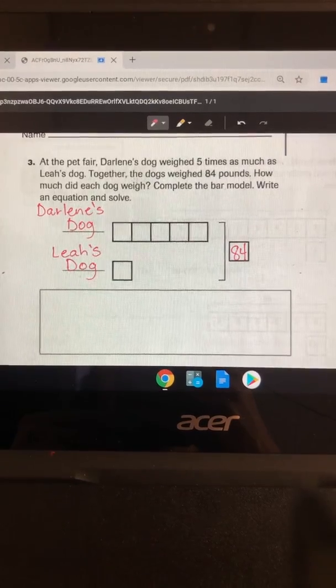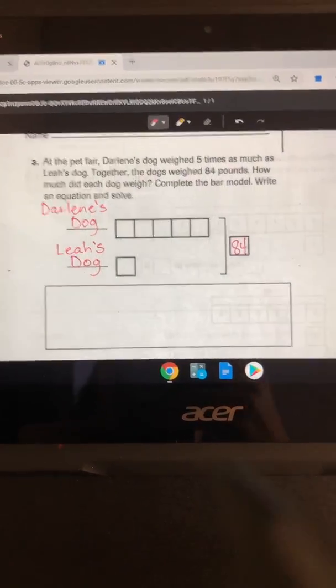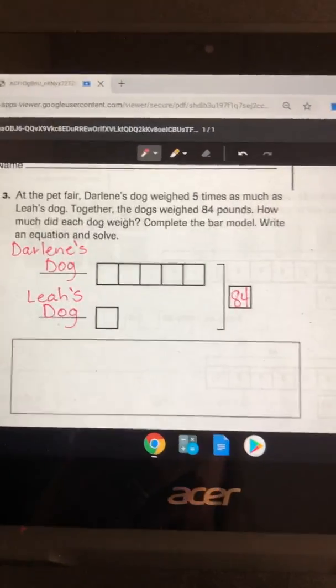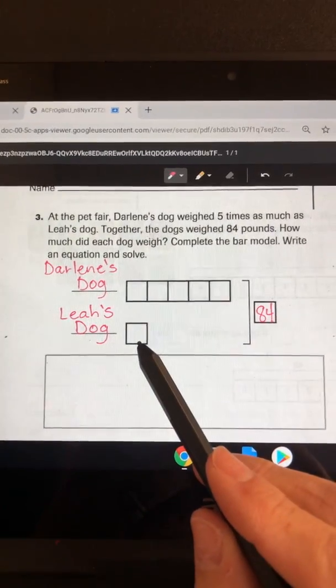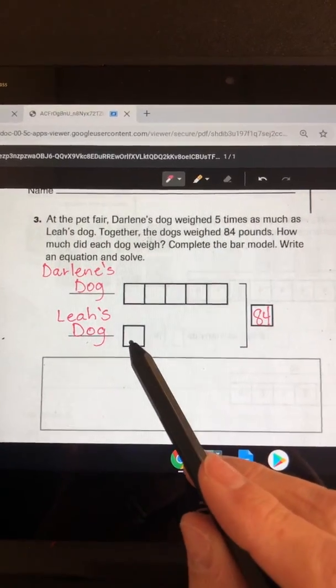Okay, so I've written on here already. I know that Leah's dog is the smaller dog, so I've written Leah's dog next to the single square. And Darlene's dog is the bigger one, so her dog is five times the size of Leah's dog.